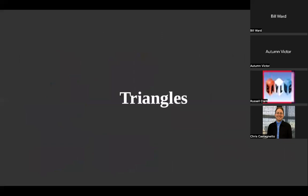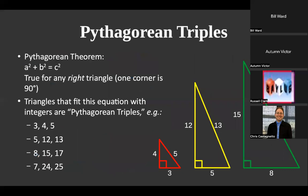Now let's talk about triangles. First, a little geometry. I'm not going to prove the Pythagorean theorem — that's for your math teacher — but a² + b² = c². For the red triangle, 3² = 9, 4² = 16, which add up to 25 = 5². For the yellow one, 5² + 12² = 25 + 144 = 169 = 13². And 8² + 15² = 17² as well. There are a few other Pythagorean triples — 7, 24, 25 would also work.